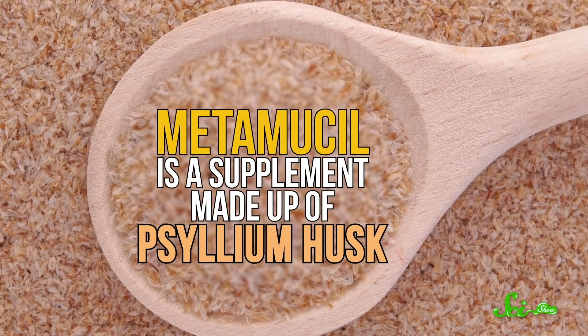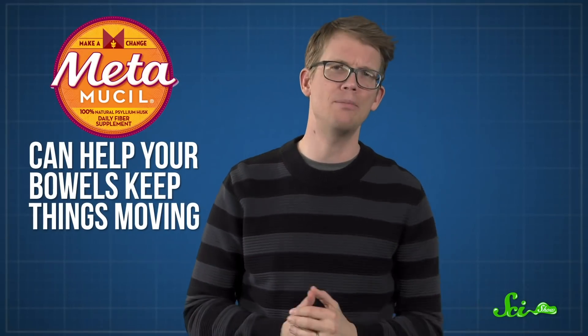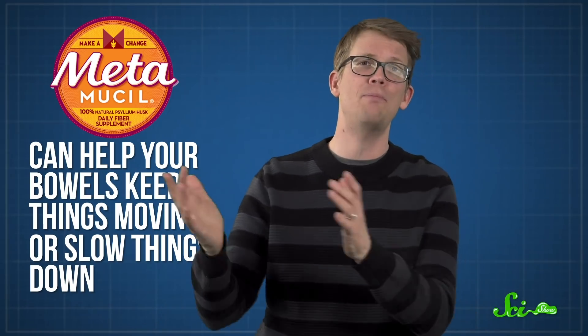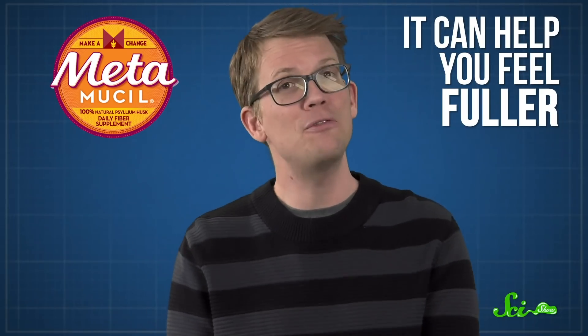And that's something that Metamucil has really helped me with. It's a supplement made up of psyllium husk, that gelling-soluble fiber I was talking about earlier. The fiber in Metamucil can help your bowels keep things moving if you're feeling constipated, or slow things down and make your poop thicker if you're on the other end of that spectrum. And before it gets all deep into your intestines, it can help you feel fuller. Overall, it makes your bowel movements easier and more regular, less straining and struggling and sitting in the bathroom for 20 minutes while you wait for things to get a move on and get all stressed out looking at Twitter. And I can say for certain that having more regular, softer poops has made me a much happier person, and I think it might make your life a lot better, too.